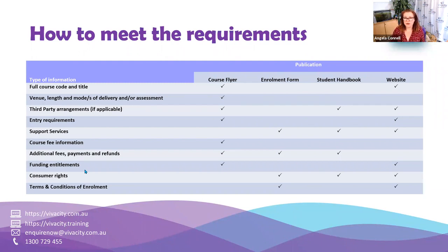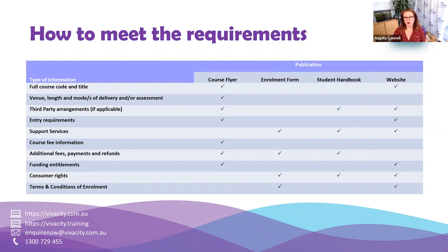Following this webinar, you should conduct an audit of your website. Last month we covered marketing, so it might be a good idea to also review that recorded webinar. What we do in an audit is review all of the information you provide to the student prior to course commencement to make sure it has sufficient, clear and transparent information. You can use the marketing checklist available on Unicorn to check all of your marketing materials.